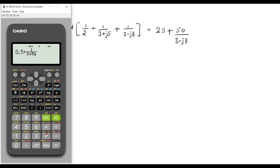Then we have plus 1 over 3 minus J8, 3 minus 8I, equal. It gives 0.629 minus 0.037.